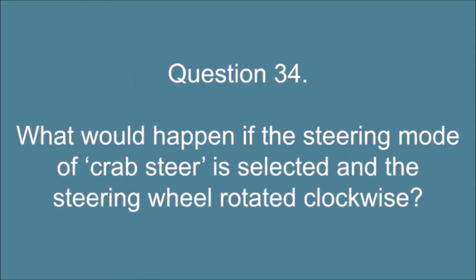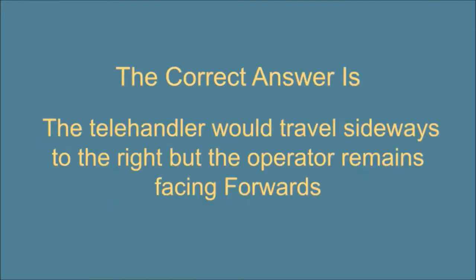Question 34. What would happen if the steering mode of crab steer is selected and the steering wheel rotated clockwise? The correct answer is: The telehandler would travel sideways to the right but the operator remains facing forwards.